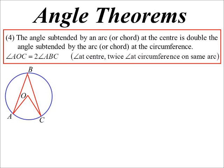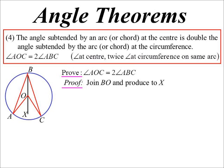So angle at the center is twice the one at the circumference. Let's go and prove that. Well, how I'm going to prove it is I'm going to join up B and O and produce it to a third point which I'll call X.